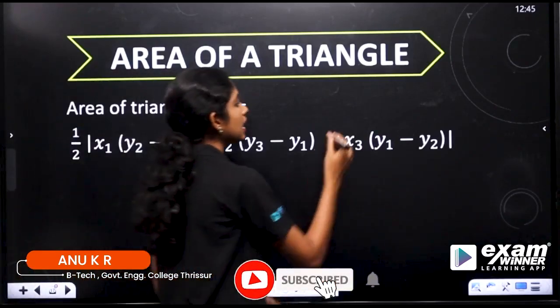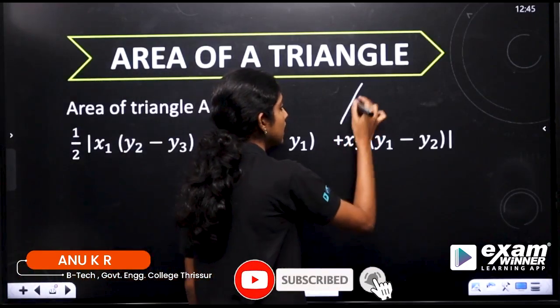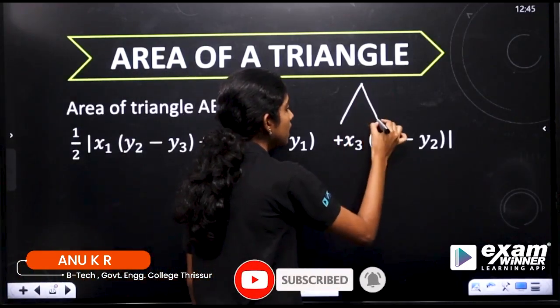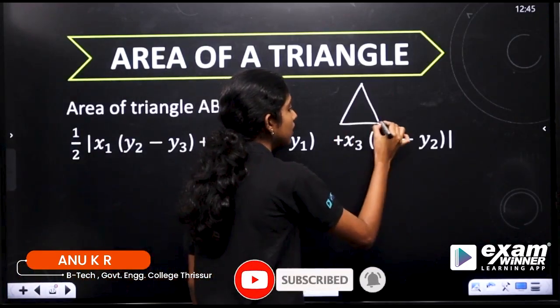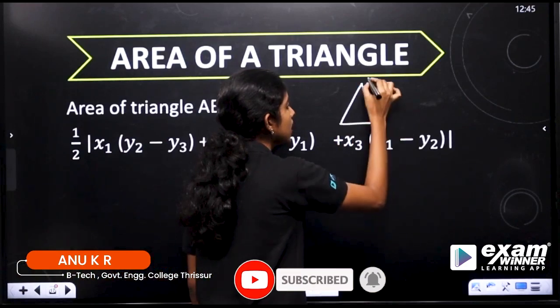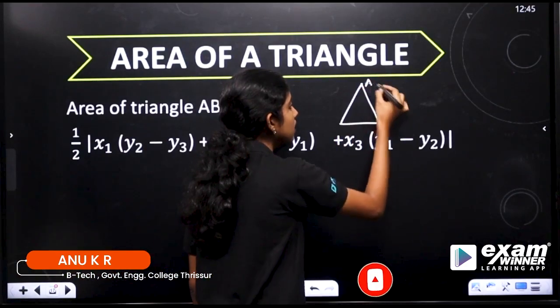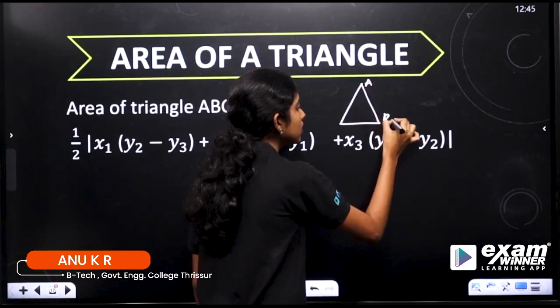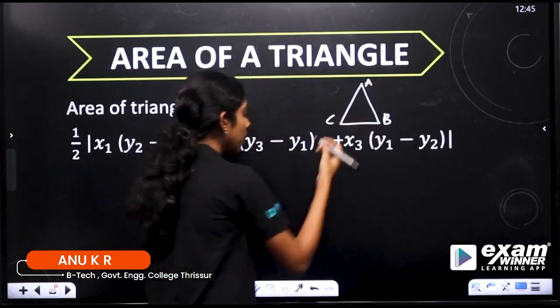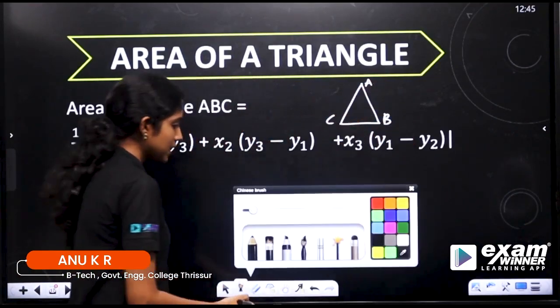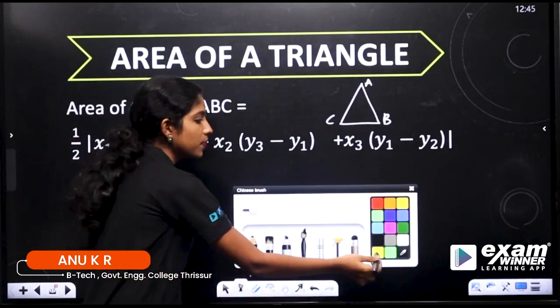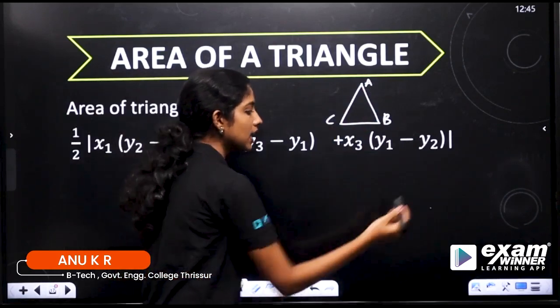Now we have to make triangle ABC. This is the triangle. This is A, this is B, and this is C.